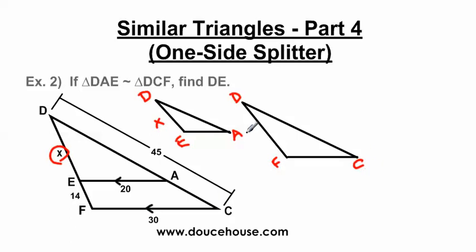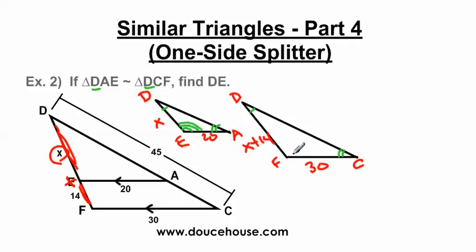X goes here and 20 goes on the small triangle. The whole side from D to F requires adding X and 14, giving X plus 14. The bottom side from F to C is 30. D and D come first, so those angles are congruent. A and C come second, so they're congruent. E and F come third and are congruent. We know D to C is 45, but since I don't have D to A, I can't use the 45 — there's no corresponding measurement for that proportion.